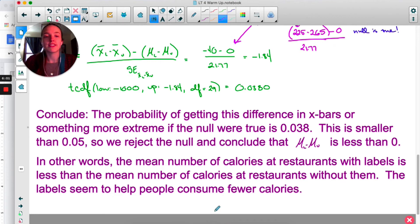So conclusion: the probability of getting this difference in x̄'s or something more extreme if the null were true is 0.038. As always, remember that this statement is really important. You have to clarify that it's the probability if the null were true and make sure that you're also saying something more extreme as well, because we're interested in anything at our x̄ or less. This is smaller than 0.05, so we reject the null and conclude that the difference in means is less than zero.